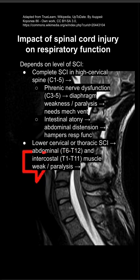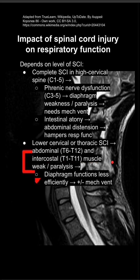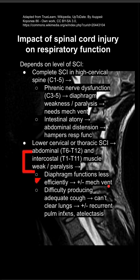If you have a lower spinal cord injury, you could have weakness or paralysis of the abdominal muscles, if it's T6 to T12, or of the intercostal muscles, if it's T1 to T11. This results in a diaphragm that functions less efficiently, so they might need mechanical ventilation.